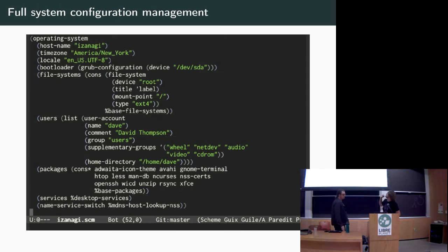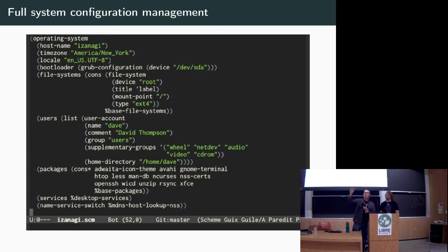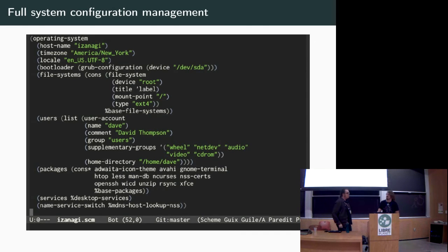We do full system configuration management. This is the real configuration for my laptop — just this page of code. We have packages, users, file systems, my GRUB configuration, all that. I run my laptop on that every day. It's great and it's reliable. And if something goes wrong, just like with the package rollback, I can roll back to the previous working system from the GRUB boot menu — not just selecting a kernel, but all the packages, all the config files. You upgrade MediaGoblin and Apache at the same time, you can move all of that back at the same time in one operation. Recently we started getting GNOME support, but it was shaky — when I closed my laptop and it suspended and opened back up, it would suspend again, infinitely. So I just rebooted the machine, picked the previous instance with XFCE, and went back to being happy until that problem was resolved.